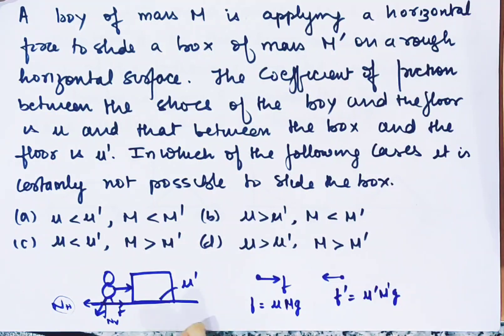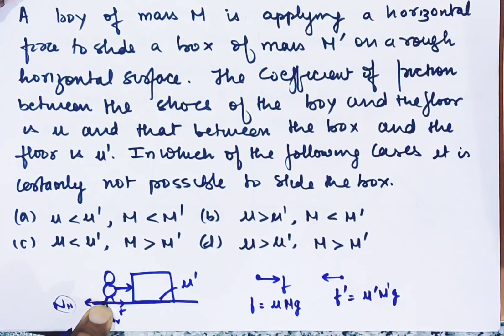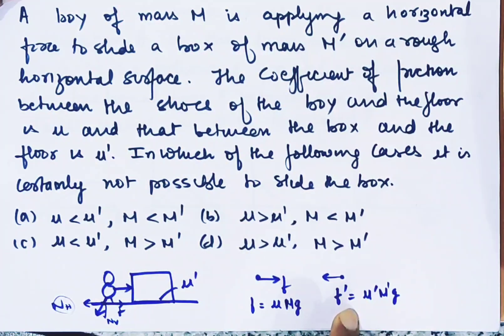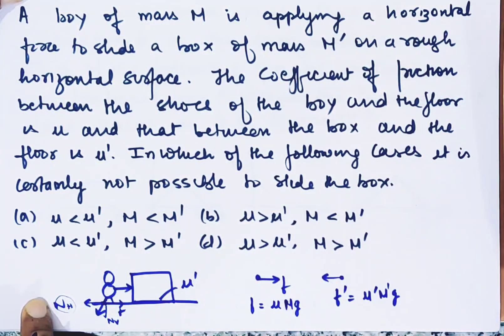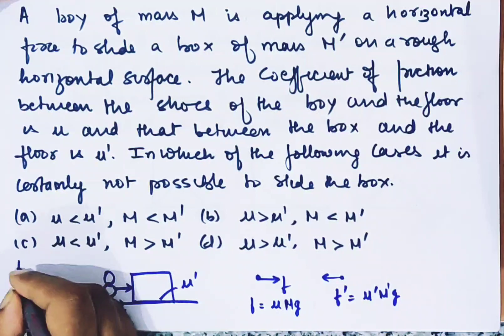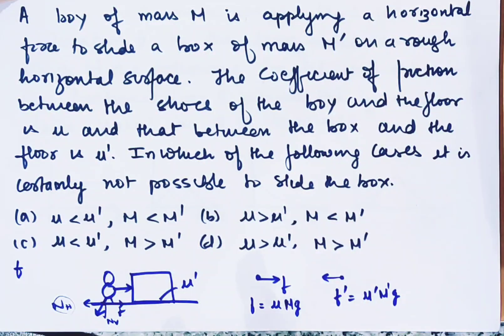Now, to slide the box, the friction on the boy should be greater than the friction acting on the box. If the boy's friction is less, then the boy will slip back and the box won't move.